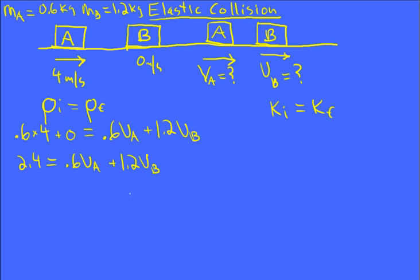So if I have two unknowns, if I can get a second equation, I should be able to solve for this. And so the initial kinetic energy is all in mass A. One half its mass times its velocity squared and then zero just to show that mass B isn't moving. If it was, we could put its term in there. And then I have the same two unknowns show up in the kinetic energy equation.